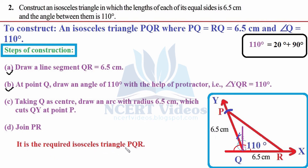This is the required isosceles triangle PQR with angle Q equals 110 degrees. In an isosceles triangle the base angles are equal. Their measure is 180 minus 110 equals 70 degrees, and half of 70 is 35 — so the two base angles are each 35 degrees, because the sum of all angles in a triangle equals 180 degrees.